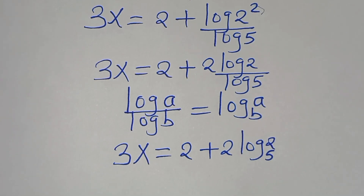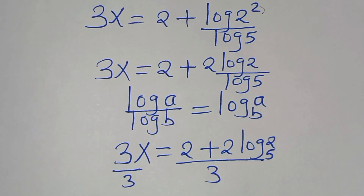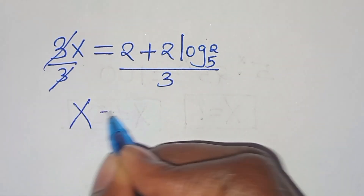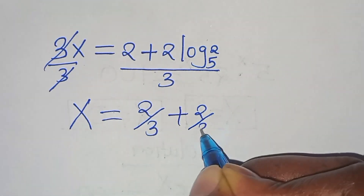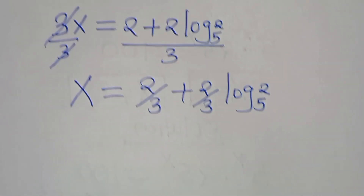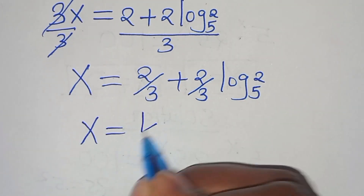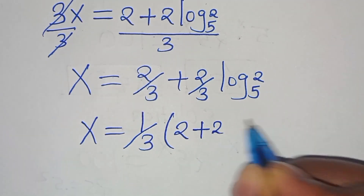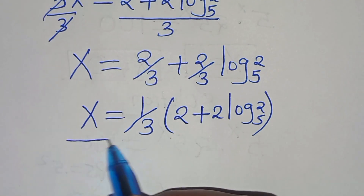The next step is to divide by 3. Simplifying 3 and 3, x equals 2/3 plus 2/3·log₅2. Since 1/3 is common, we can factor out 1/3, so that x equals (1/3)(2 plus 2·log₅2). This is the value of x.